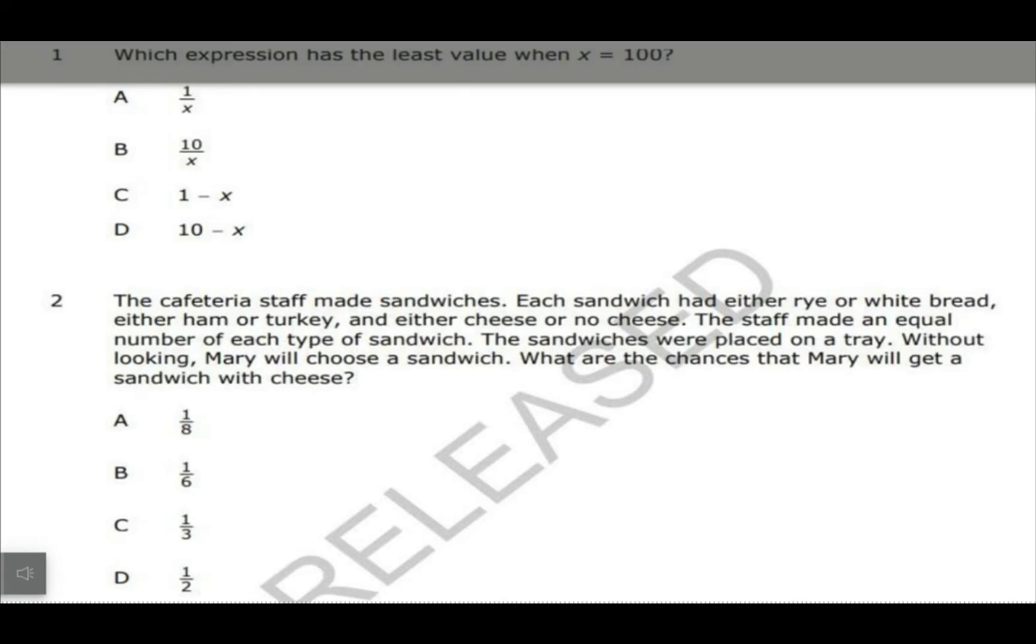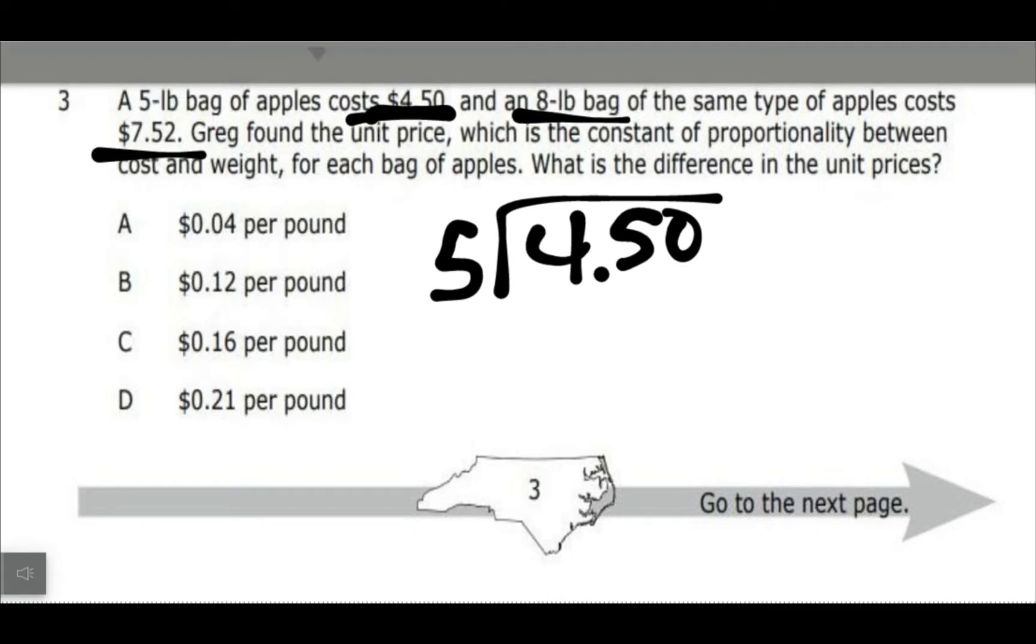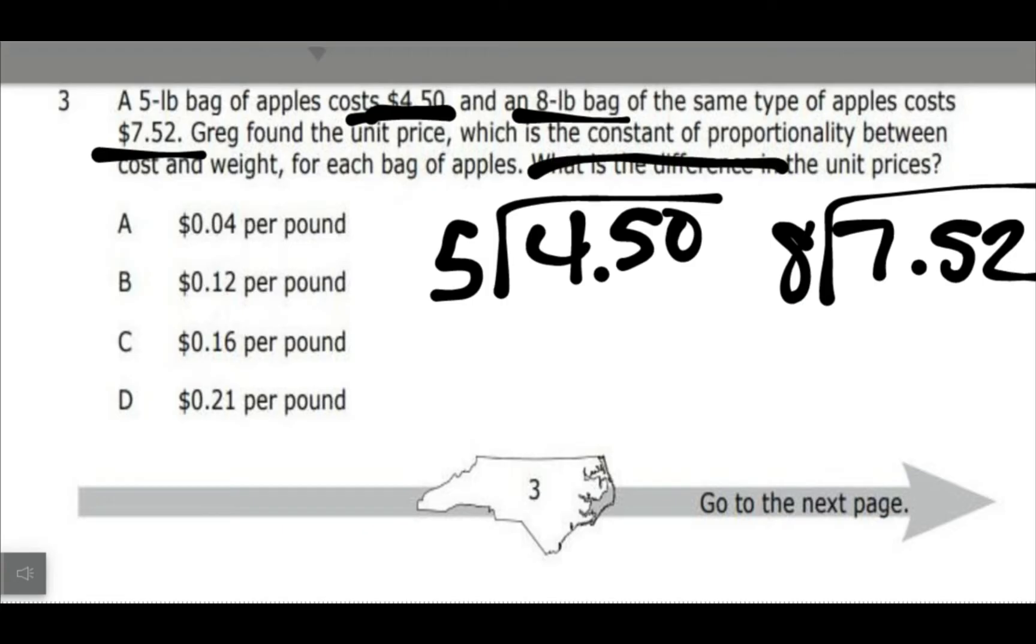The next one, and this is kind of what I assigned you, is on unit rates. Usually when you're doing unit rates, you just want to divide. So in this problem, we have a five pound bag of apples cost 450, and so I want to know the unit price, so I do 450 divided by five. And then the eight pound bag here costs 752, so I want to divide that, and then they want to know the difference in unit prices.